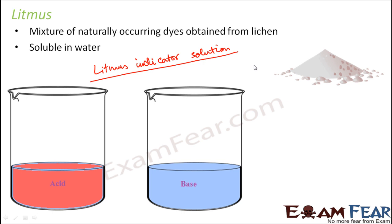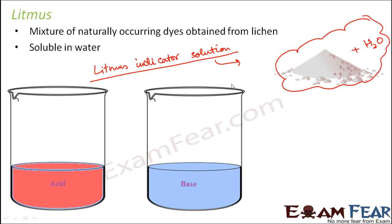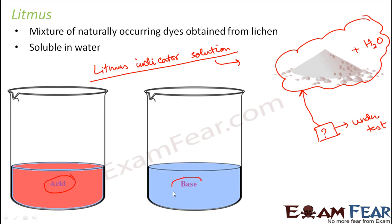Litmus indicator solution is litmus powder mixed with water. That solution acts as an indicator. When you have another solution under test — to find out whether it is acidic or basic — you put a few drops of that solution into the litmus solution. If the litmus solution turns red, the solution under test was acidic. If it turns blue, the solution under test was basic. Because of this property, it is used as an indicator.